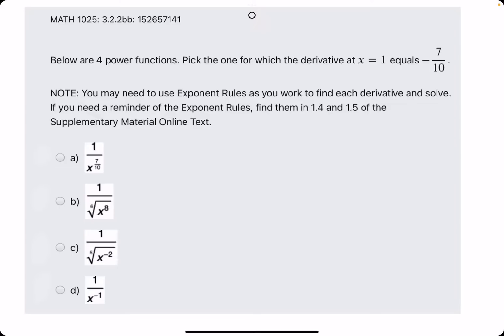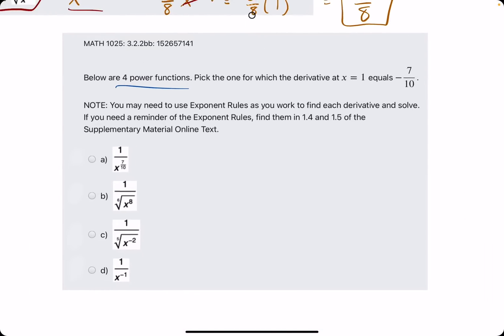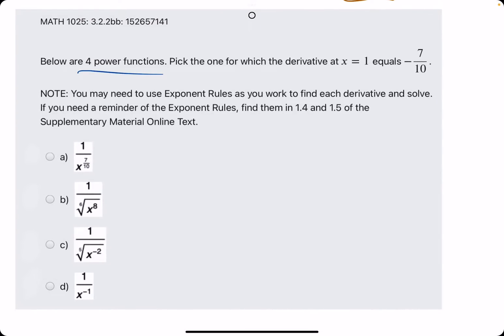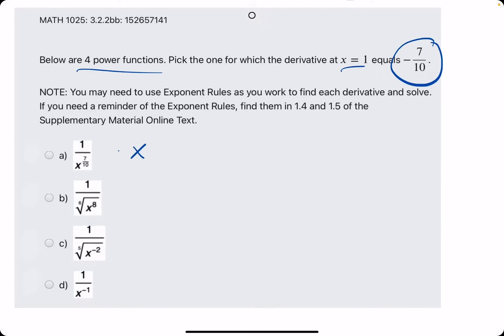So what we do is, in this problem we are given four power functions down here, and technically they expect you to find the derivative of each function, plug in x equals 1 for all of them, and see which one equals negative 7 tenths. What we'll do instead is just practice rewriting all these functions as x to the a power, because that's the first step for how we would go about finding the derivatives of each of these functions.